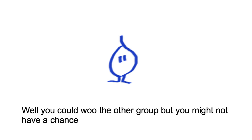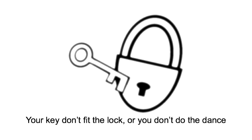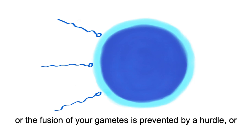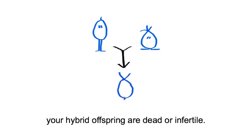Well you could woo the other group but you might not have a chance. Your key don't fit the lock or you don't do the dance. Or the zygote you're gonna need to prevent from occurring, or your hybrid offspring turns out to be infertile.